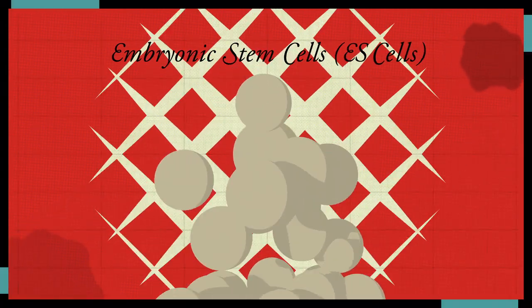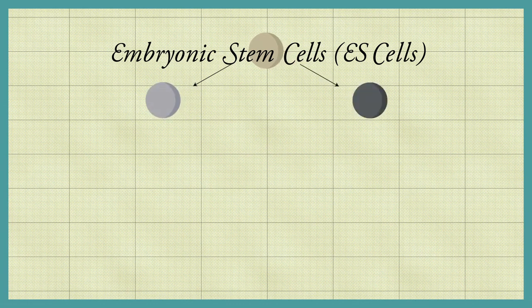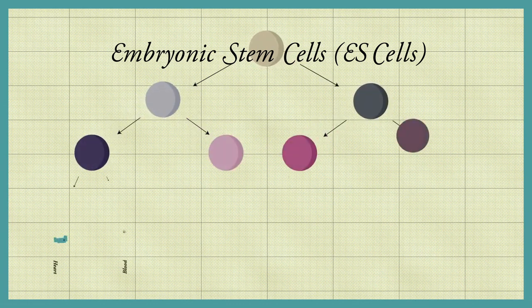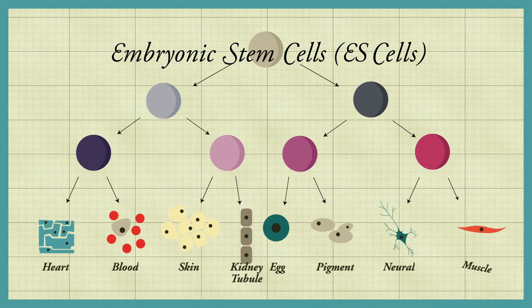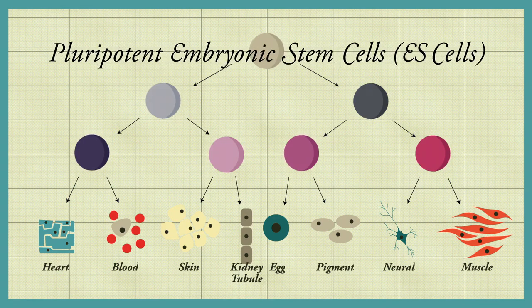Like cells in a developing embryo, ES cells retain the ability to form any type of cell in the adult body. Thus, ES cells are said to be pluripotent.